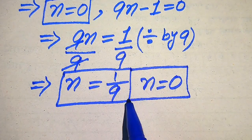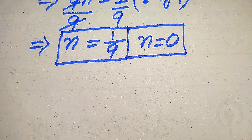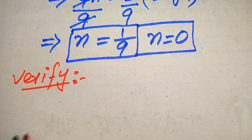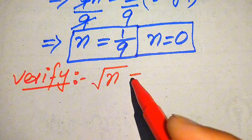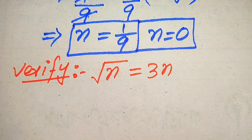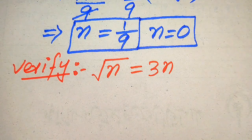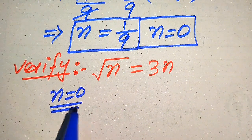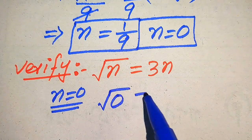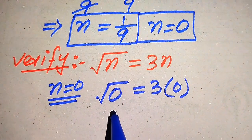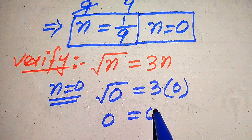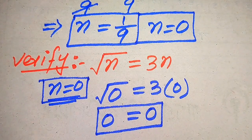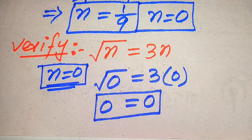So we get two roots of the given equation: n equals 0 and n equals 1 over 9. Now we need to verify which roots are solutions and which are extraneous. We copy down the given equation: square root of n equals 3 times of n. First we verify n equals 0. Substituting gives square root of 0 equals 3 times 0, which is 0 equals 0. This is satisfied, so n equals 0 is a solution.